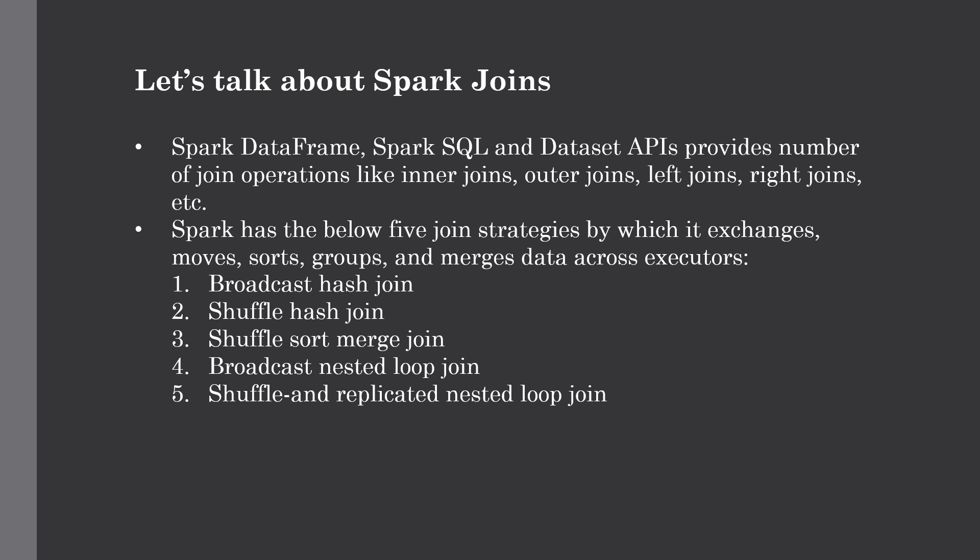Spark has five distinct join strategies: Broadcast Hash Join, Shuffle Hash Join, Shuffle Sort Merge Join, Broadcast Nested Loop Join, and Shuffle Replicated Nested Loop Join. Using these strategies, Spark exchanges, moves, groups, and merges data across executors. In this lecture, we'll focus on only two — Broadcast Hash Join and Shuffle Sort Merge Join — which will be enough to optimize your Spark workloads.